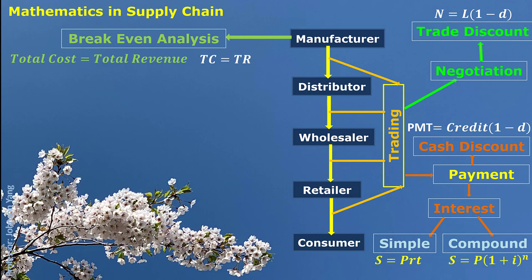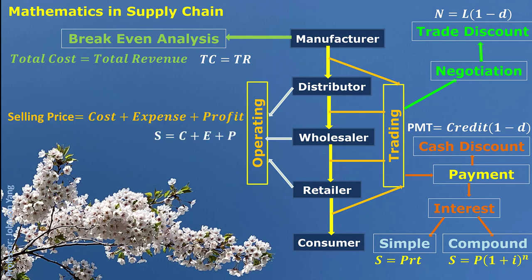Besides this, we have another part that talks about price structure. For any part of the supply chain, they all need to understand how to set up their selling price. That's the operating part. The price structure basically comes from the cost of buying, operating expenses, and expected profit. This is the whole picture of this course.